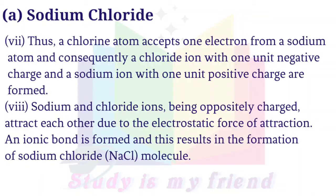7. Thus, a chlorine atom accepts one electron from a sodium atom and, consequently, a chloride ion with one unit negative charge and a sodium ion with one unit positive charge are formed.